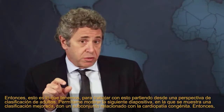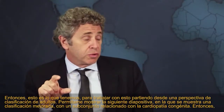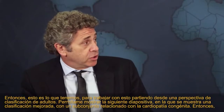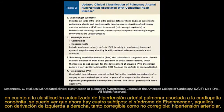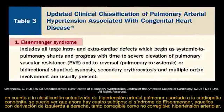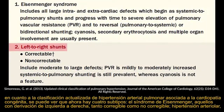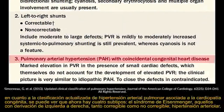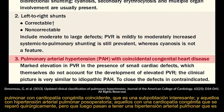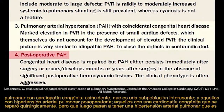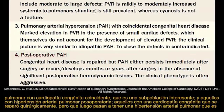In the updated classification of pulmonary arterial hypertension associated with congenital heart disease, there are now four subtypes: Eisenmenger syndrome; those with left-to-right shunts, both correctable and non-correctable; pulmonary arterial hypertension with coincidental congenital heart disease; and those with postoperative pulmonary arterial hypertension — patients with repaired congenital heart disease who go on to have progressive pulmonary arterial hypertension.